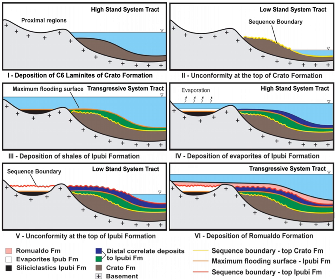In most cases the environments associated with particular rock types or associations of rock types can be matched to existing analogues. However, the further back in geological time sediments were deposited, the more likely that direct modern analogues are not available, e.g. banded iron formations.